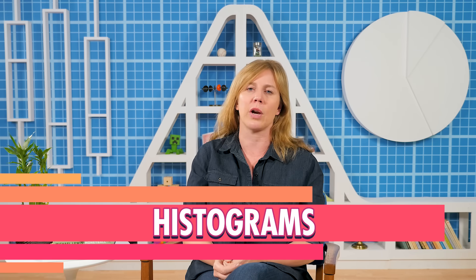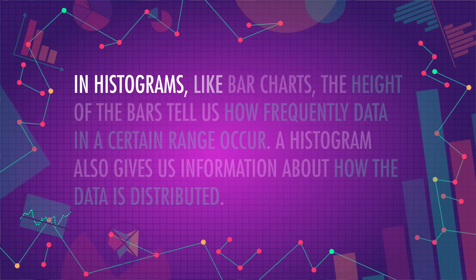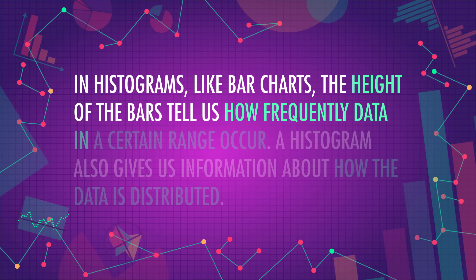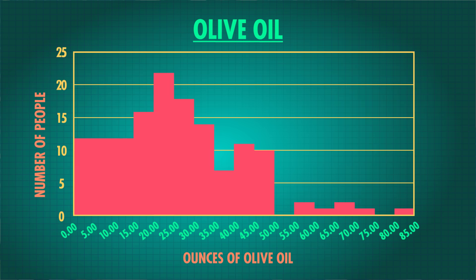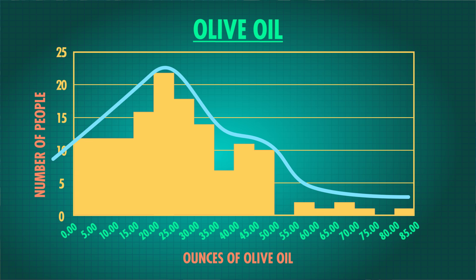Another categorical graphing method we can apply to quantitative data is bar charts. When we use bar charts for quantitative data, we squish the bars together so that they're touching, and we call them histograms. The bars are squished together because the data are continuous, which means the values in one bar flow into the next bar — there's no separation like in our categorical bar charts. In histograms, like bar charts, the height of the bars tells us how frequently data in a certain range occur. A histogram also gives us information about how the data is distributed. We can estimate where the mean, median, and mode of our data are, as well as how spread out the data is. Look at this histogram for our olive oil data. We can see that the range of data is approximately 85, since it covers values from 0 to 85 ounces, and that it's right skewed — the tail is to the right — and that its center is around 25 ounces. The histogram gives us more information about the data than a frequency table does, but they're still obscuring what the specific data values are.